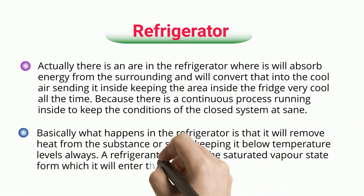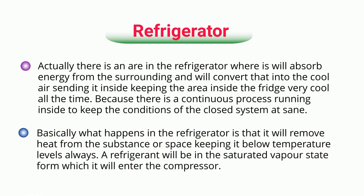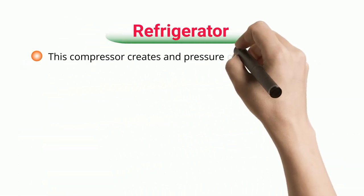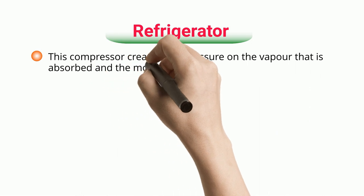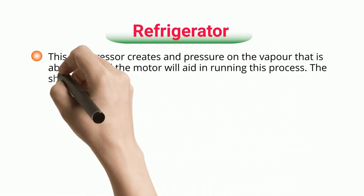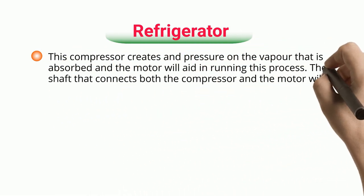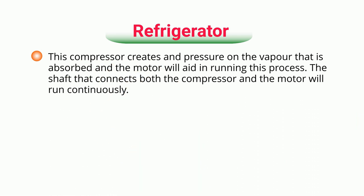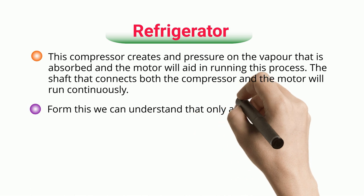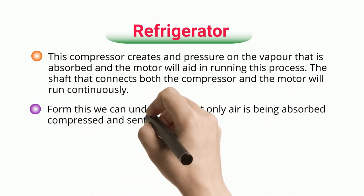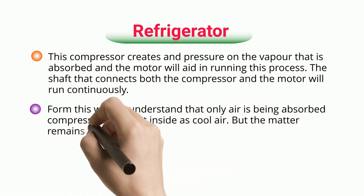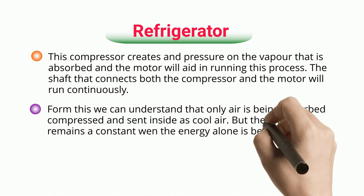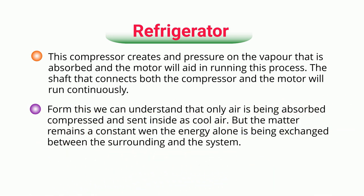A refrigerant will be in the saturated vapor state, from which it enters the compressor. The compressor creates pressure on the absorbed vapor and the motor aids in running this process. The shaft connecting both the compressor and the motor runs continuously. From this, we can understand that only air is being absorbed, compressed, and sent inside as cool air, while the matter remains constant and energy alone is exchanged between the surroundings and the system.